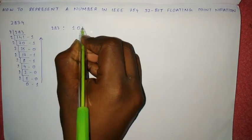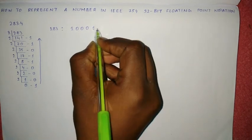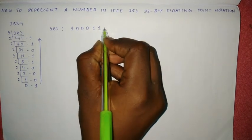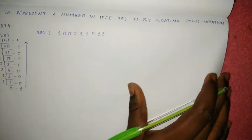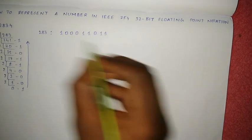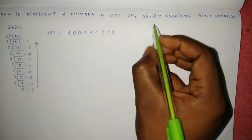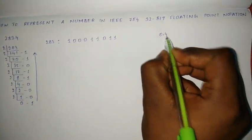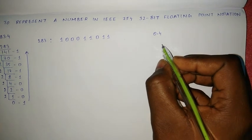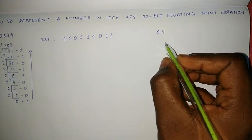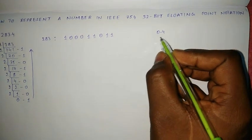Reading the remainders in reverse order, the binary form of 283 is 100011011.